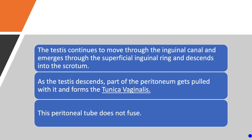In the foetus, the testis continues to move medially and downwards through the inguinal canal and emerges through a defect in the external oblique aponeurosis known as the superficial inguinal ring, and descends into the scrotum. When the testis descends, part of the peritoneum is pulled with it, wraps around it, and forms the tunica vaginalis. This peritoneal tube does not fuse, so the bowel within the peritoneal cavity can pass inside the tube — even into the scrotum — giving rise to a hernia.